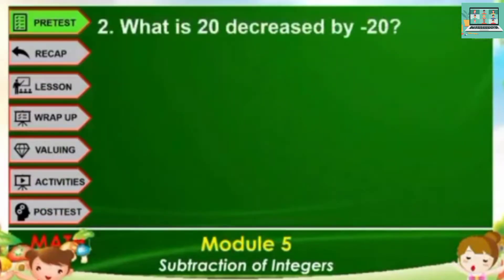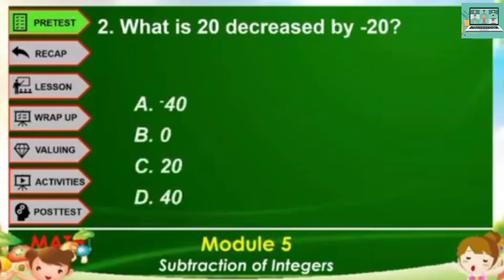Number 2. What is 20 decreased by negative 20? A, negative 40. B, zero. C, 20. D, 40.